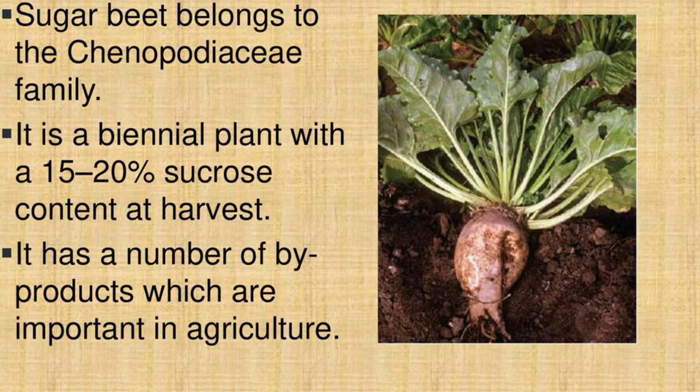Rotation with non-host crops such as small grain, corn, soybeans, or alfalfa will reduce the soil population through natural decline. However, the managed rotation must be long enough to effectively manage the nematode. The length of time for rotating out of sugar beets can be estimated using an expected 50% annual decline rate after field populations have been determined. Early planting when soil temperatures are less than 60 degrees Fahrenheit will also reduce disease damage, as the older plants are when infection occurs, the less damage and yield loss are realized.